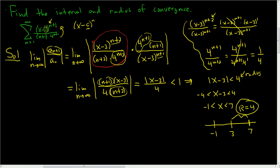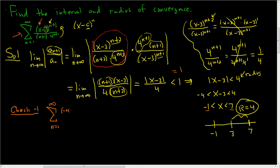Now we have to check the endpoints, because when L equals 1 in the ratio test there's no information. Setting the expression equal to 1 gives x equals negative 1 and x equals 7, and the ratio test gives no info in that case. Let's check x equals negative 1 by plugging it back into the original series: the sum as n runs from 1 to infinity of negative 1 minus 3, so negative 4 to the n plus 1, over n plus 1 times 4 to the n plus 1.